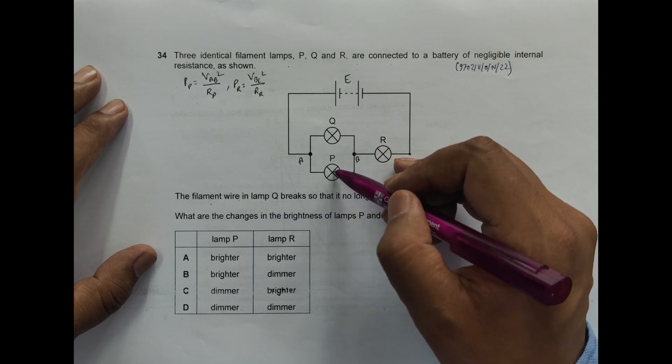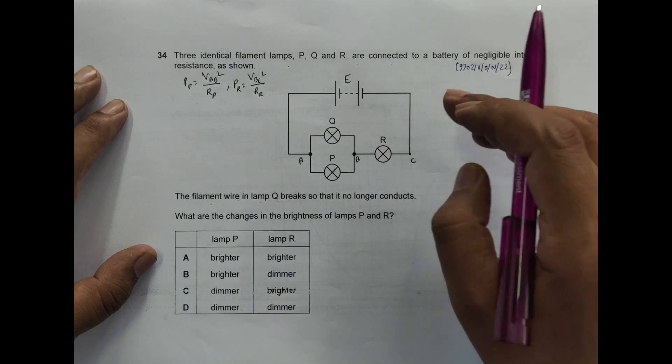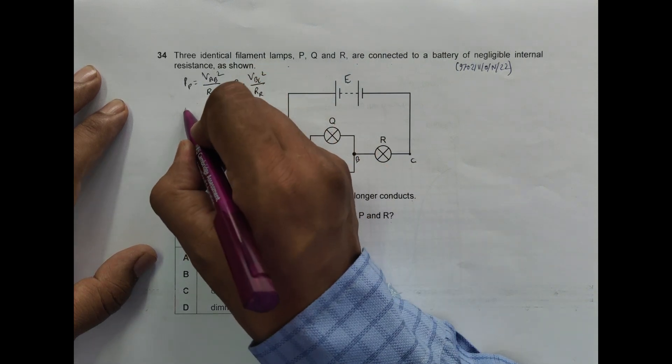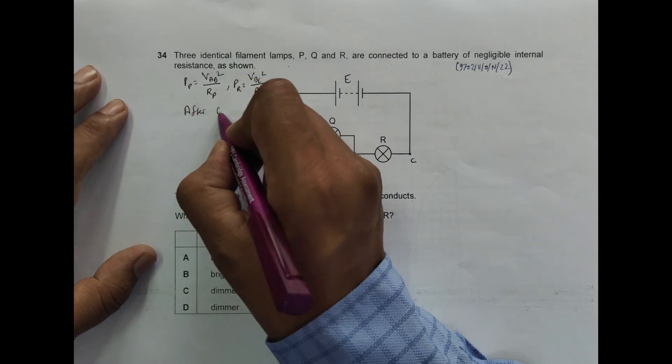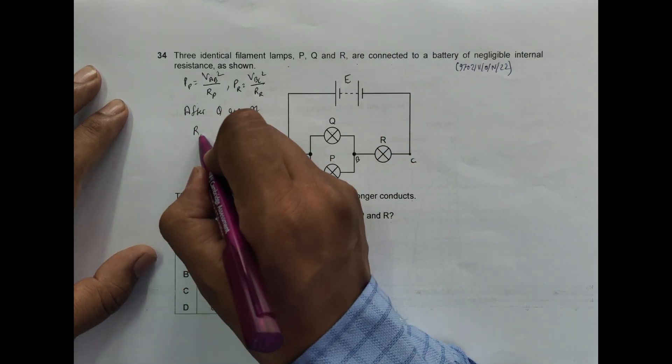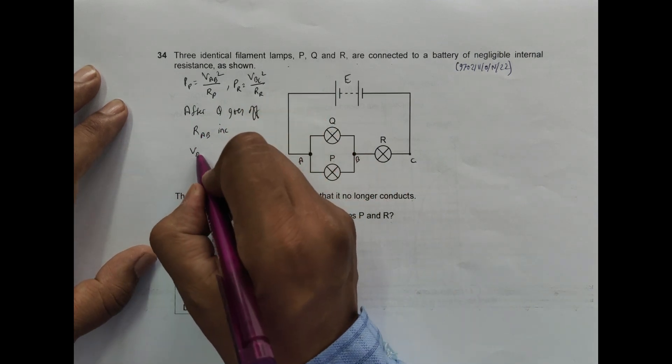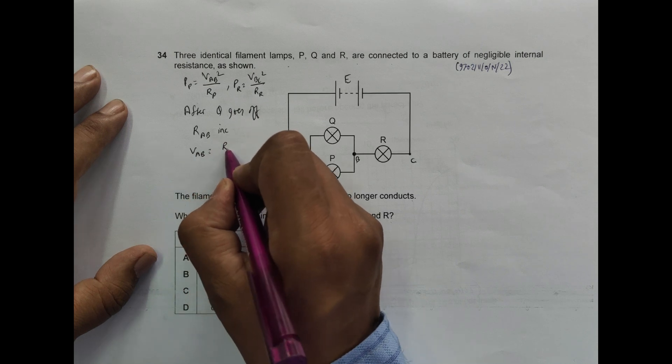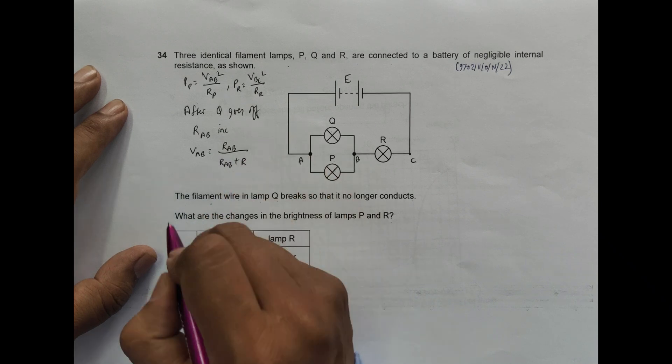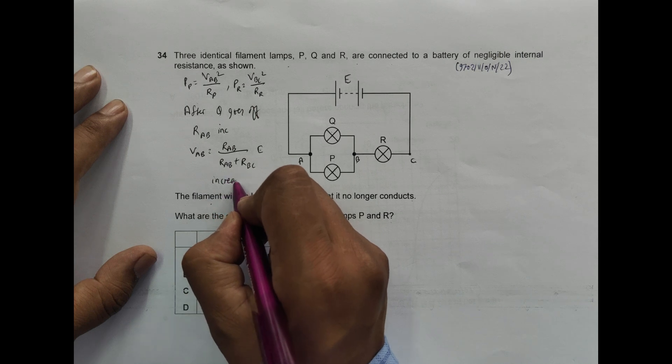So that means the overall R should increase, because when connected in parallel R decreases. So when that parallel connection goes off, R increases. So now this R should increase. After Q goes off, R_AB should increase. And if this increases, then V_AB should be equal to